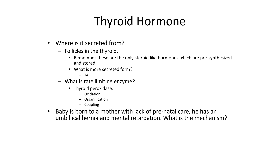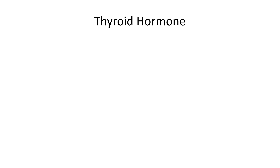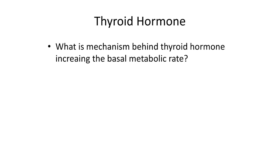Consider a baby born to a mother with lack of prenatal care who has an umbilical hernia and mental retardation. The mechanism here is that thyroid hormone is important for neural development — if you have hypothyroidism in pregnancy, CNS maturation is going to suffer. The pathology is cretinism.